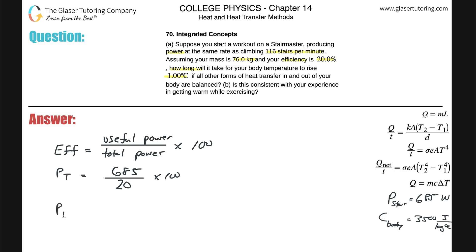And that works out to be 3425 watts. Now the total power that is being output by the body is not all used to generate heat, nor is all of it used to generate useful power to actually climb the stairs. A fraction of this power is used as useful power, that's the 685.